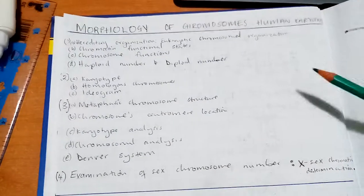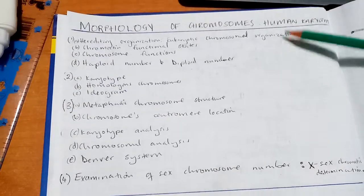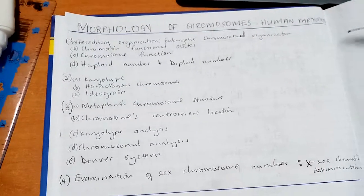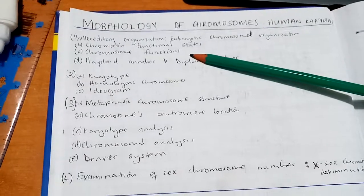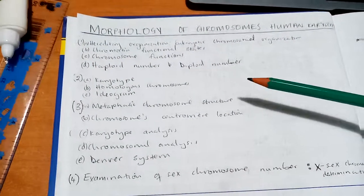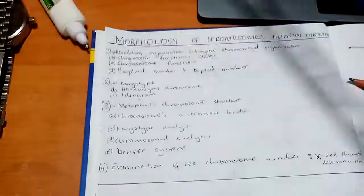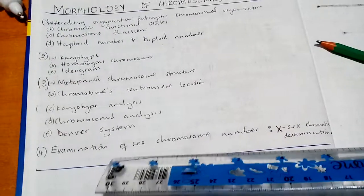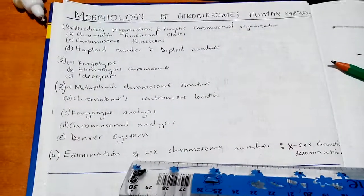We'll be looking at the morphology of chromosomes in a human karyotype, and we should be able to explain everything written here after the end of this video. Topics include: hereditary organization, eukaryotic chromosome organization, chromatin functional states, chromosome function, haploid and diploid number, karyotype, homologous chromosomes, ideogram, metaphase chromosome structure, chromosomal centromere location, karyotype analysis, chromosomal analysis, the Denver system, and the examination of sex chromosome number — that is, sex determination or sex chromatin determination.